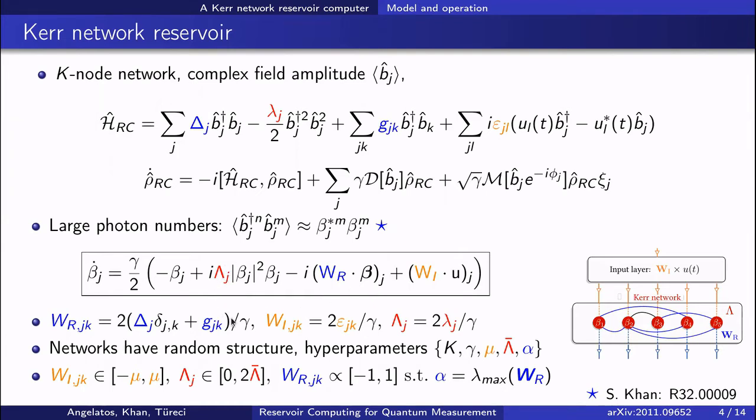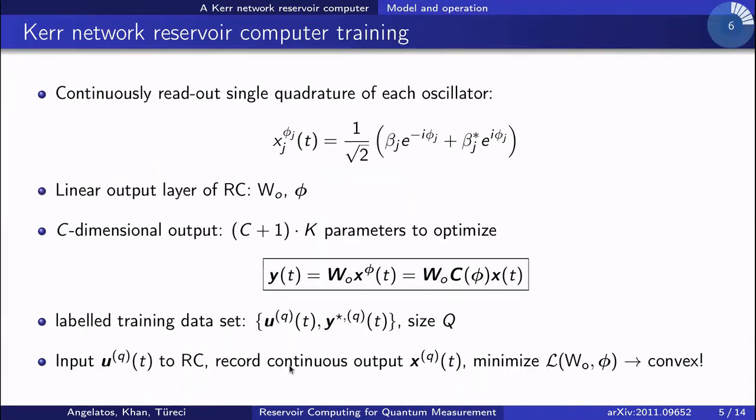We're going to consider networks with random structure, which are described then in terms of a set of hyperparameters which determine their properties. In addition to the number of nodes and the reservoir timescale, we also have input strength, an average nonlinearity, and a spectral radius of the coupling matrix.